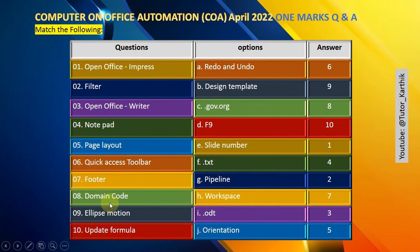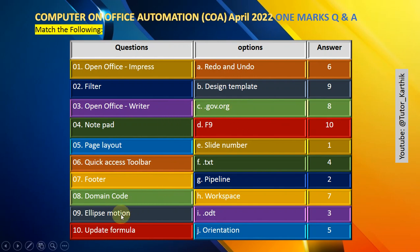Question number 8: Domain codes — .gov, .org, .com, .tn are examples of domain codes.